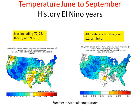Let's first talk about temperatures — what they've typically been during El Niño years in the summer months. On the left-hand side, excluding the big El Niño years, there's a pretty strong signal of cooler than normal. That cooler-than-normal signal persists even when we include all moderate to strong El Niño years on the right. So there's definitely a correlation to cooler patterns even in summer when an El Niño is developing.